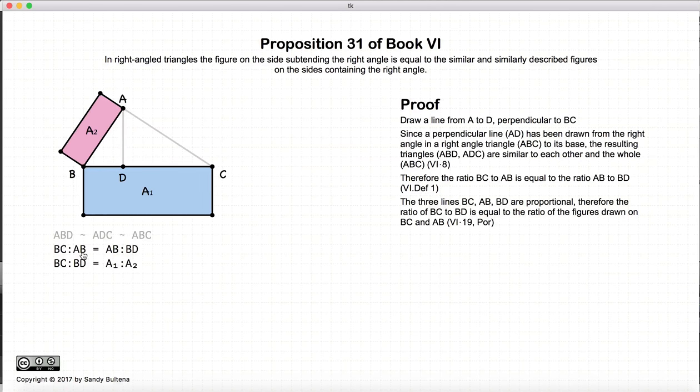So we have BC to AB is equal to AB to BD, and from proposition 19 of this book, that means that the ratio of BC to BD will be equal to the area of two similar figures drawn on the lines BC and AB. In other words, the ratio of BC to BD will be equal to the ratio of the area A1 to A2.